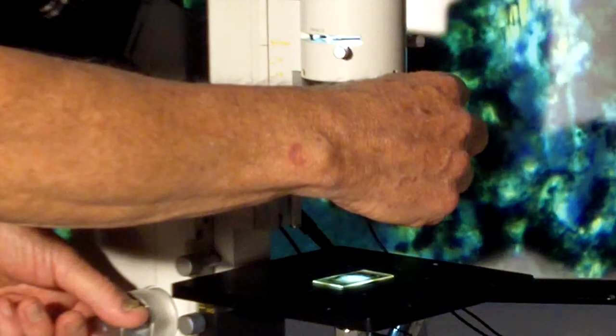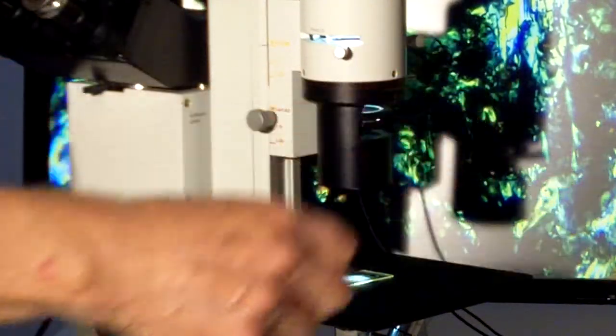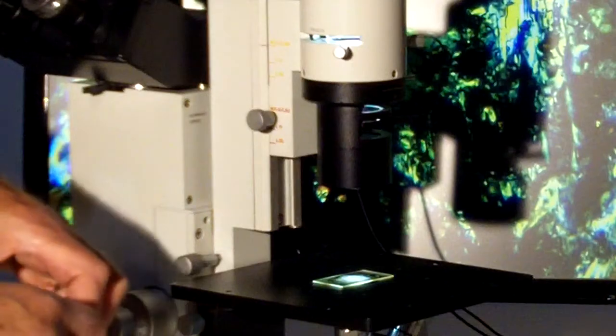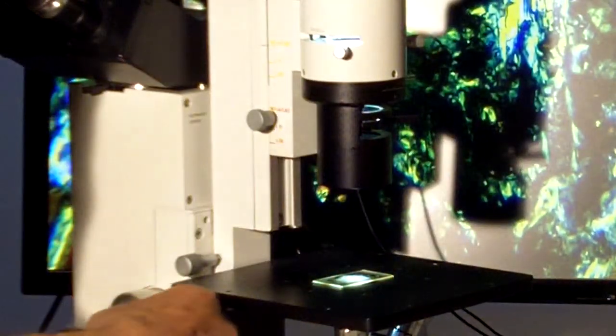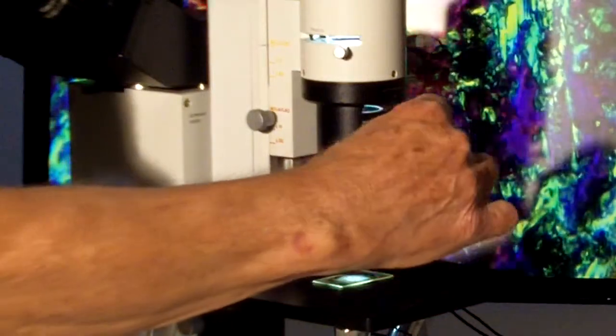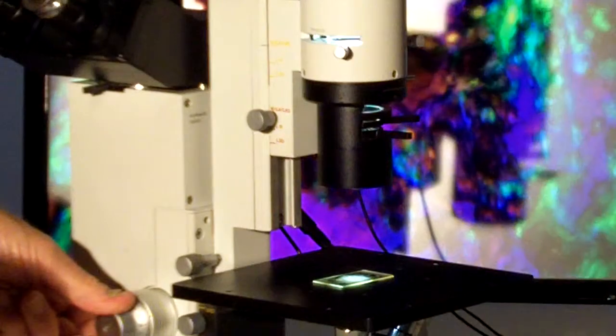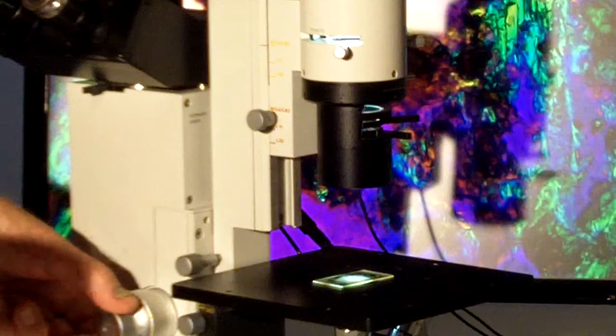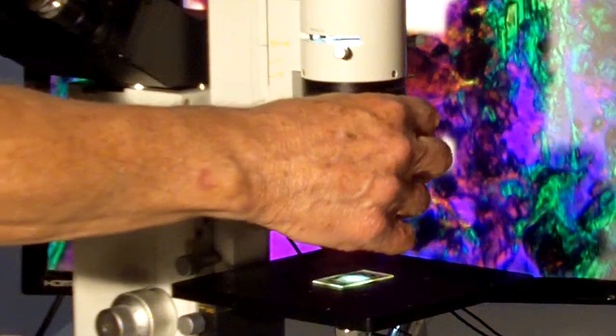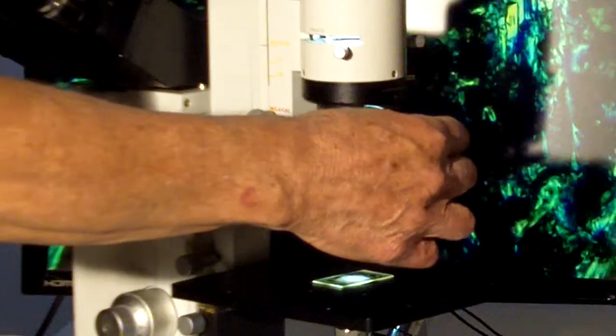We're using the same optics that we were using to look at things like diatoms and critters in pond water. The other component you can insert between the polarizer and the analyzer is a first order red compensator. Now everything that was black background becomes a beautiful magenta.